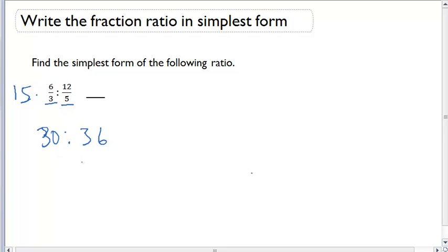Now that I have this ratio without fractions I can simplify it the way that we normally do. Can I divide 30 and 36 by a common factor? Yes, I can divide both of these by 6 and that's going to give me a new ratio of 5 to 6.